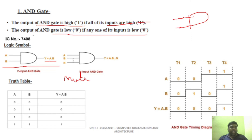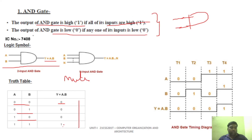You can see inputs 0,0 — 0,1 — 1,0 — 1,1. If you multiply them: 0×0=0, 0×1=0, 1×0=0, and 1×1=1. The output is only high when both inputs are 1. Every output is higher only when two inputs are high. Even if one input is low, all combinations will be low. This is the AND gate truth table, and you can also draw the timing diagram.